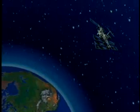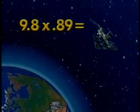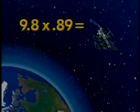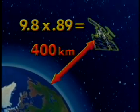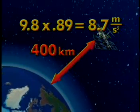If the gravitational acceleration on the surface of the Earth is 9.8 meters per second squared, what would it be 400 kilometers above the surface? You would approximate it by calculating the product of 9.8 and 0.89. That's correct. By multiplying 9.8 and 0.89, we see that the gravitational acceleration at 400 kilometers above the Earth's surface is about 8.7 meters per second squared.